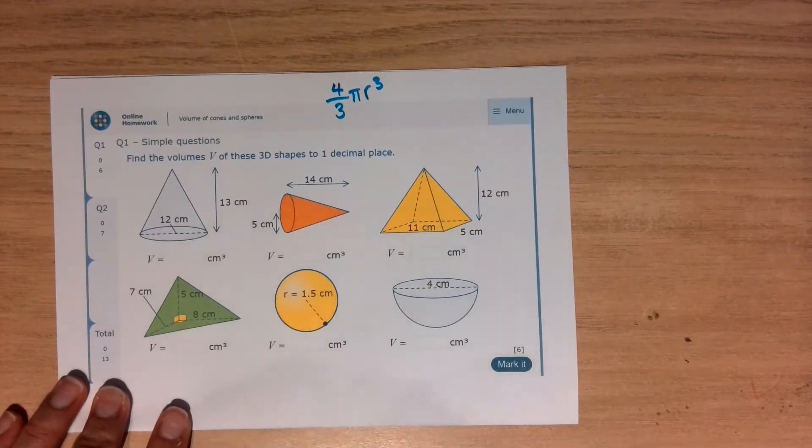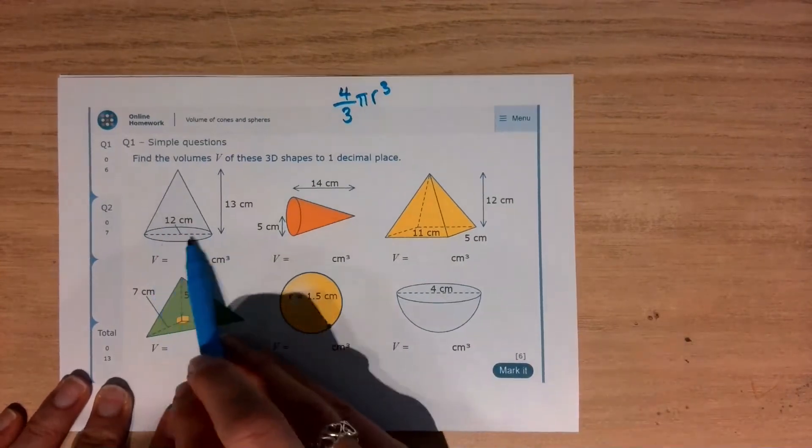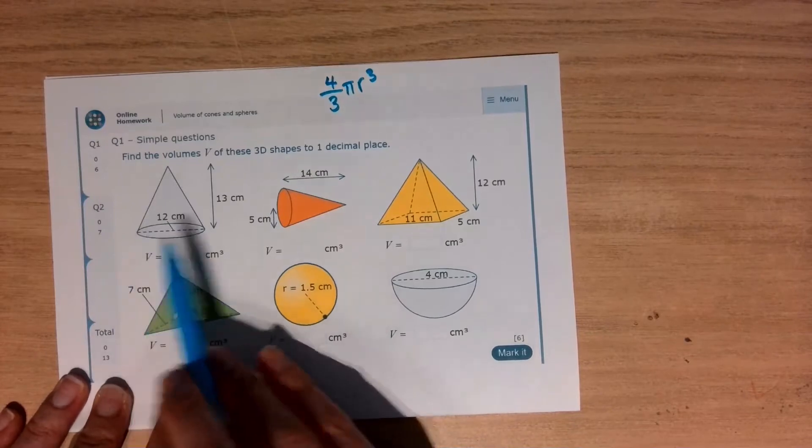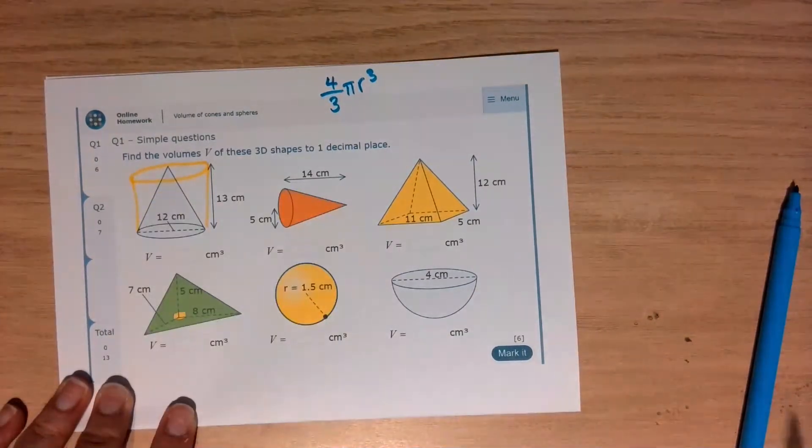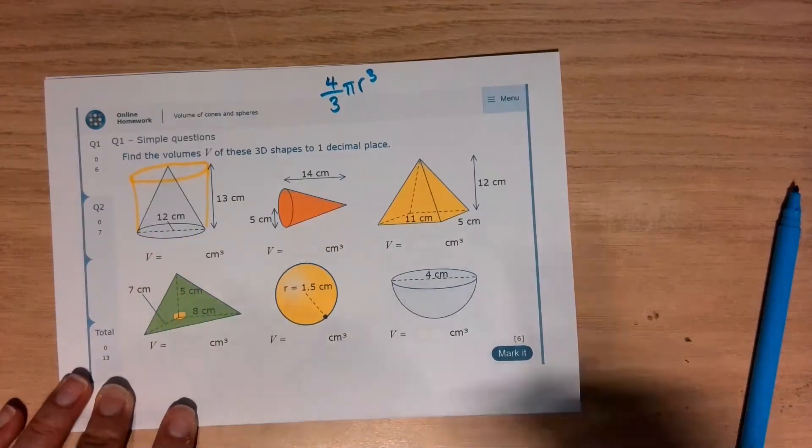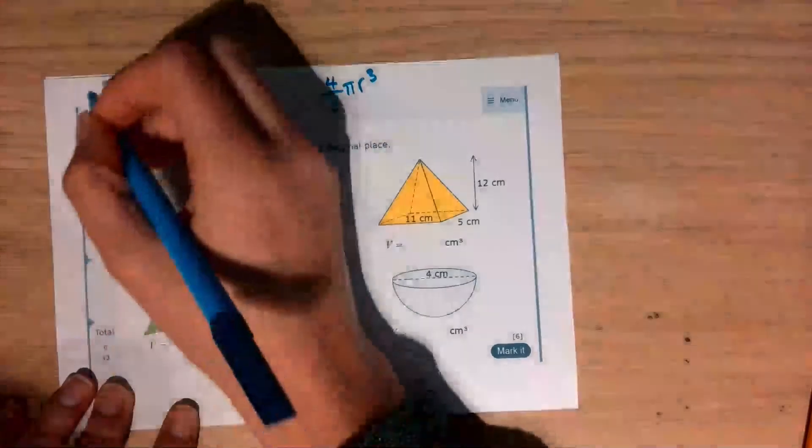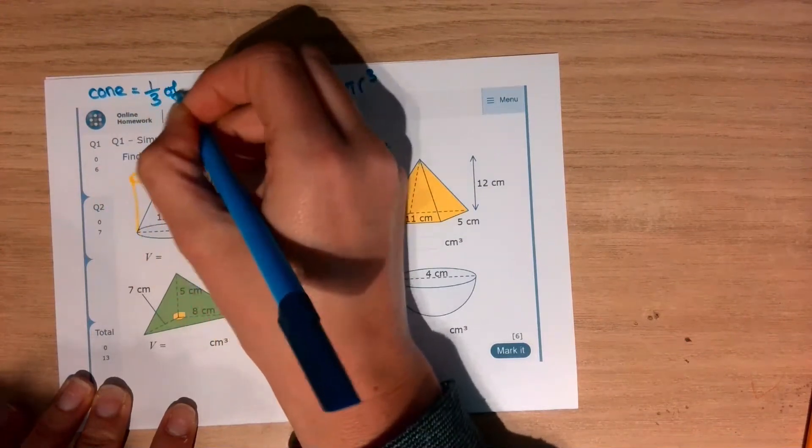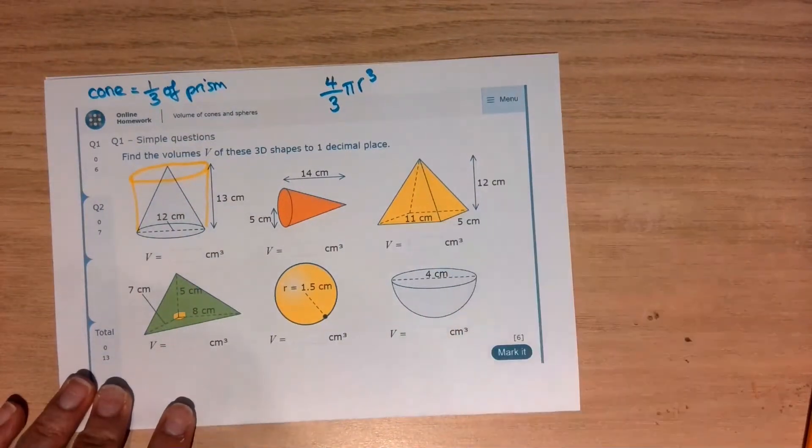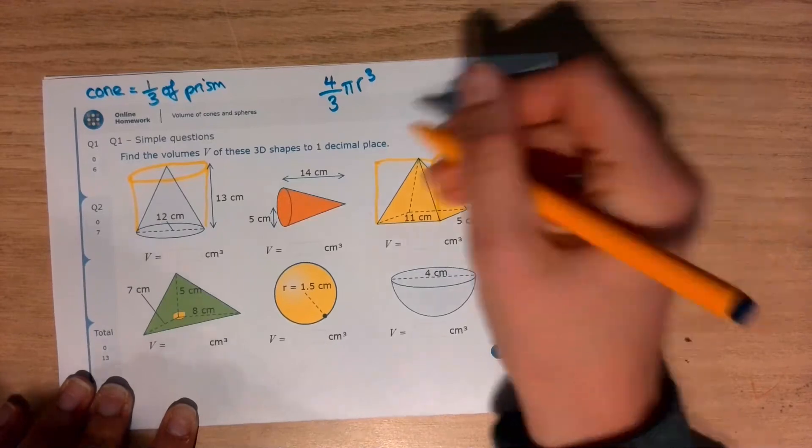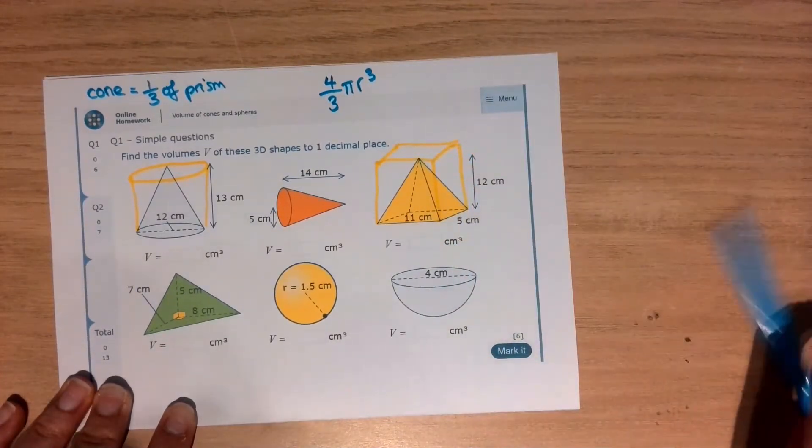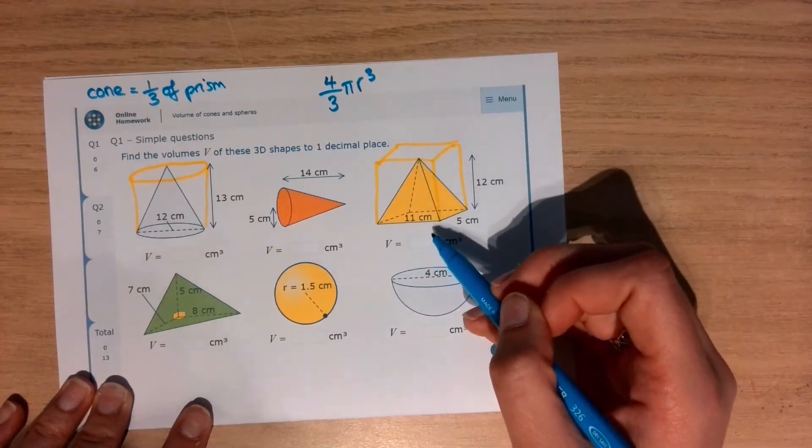You are not given the formula for the volume of a cone or a pyramid, and that's because the volume of a cone or a pyramid is very closely related to the prism with the same base. So you see this cone here with a base that's a circle diameter 12 centimeters and a height of 13. Imagine that being extended out to a cylinder with base radius 12 centimeters and height 13. The cone is one third of the prism. In the same way with this pyramid, imagine it being a cuboid. And that pyramid has a volume that is one third of the cuboid.